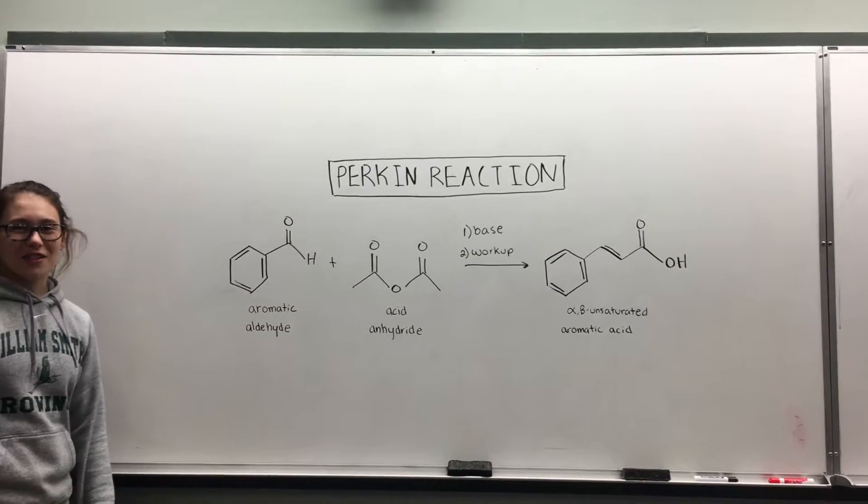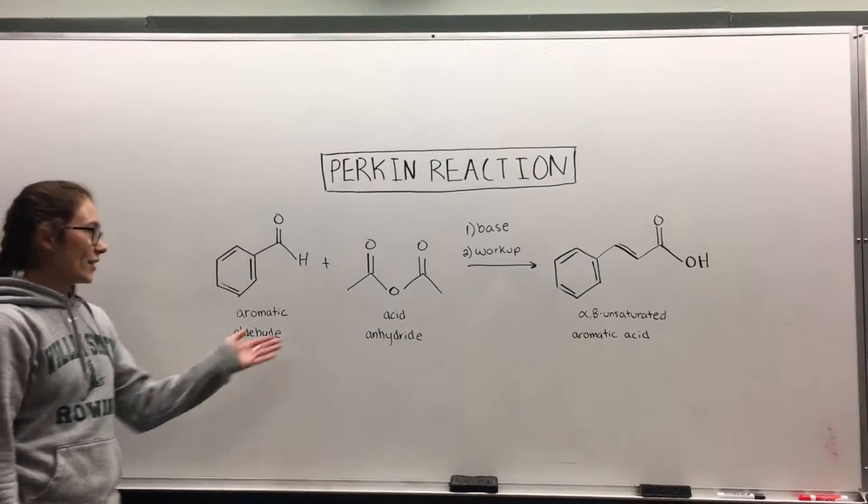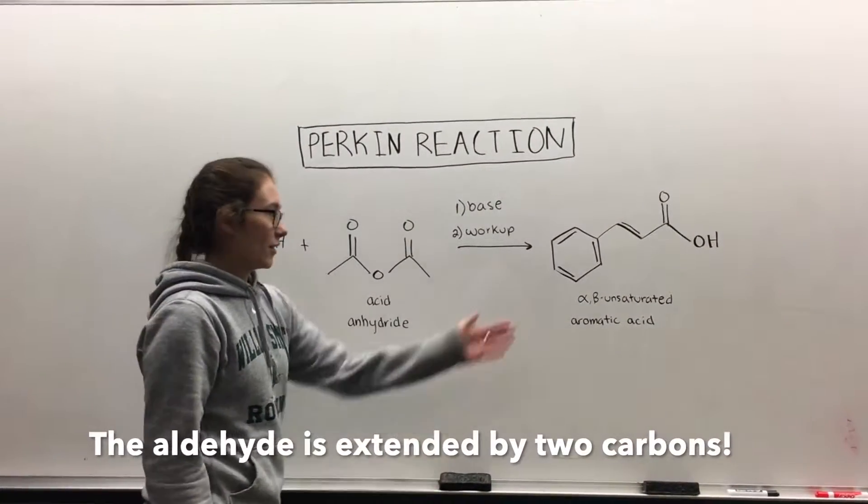So the Perkin reaction is a condensation of an aromatic aldehyde and an acid anhydride to form an alpha-beta unsaturated aromatic acid shown here.